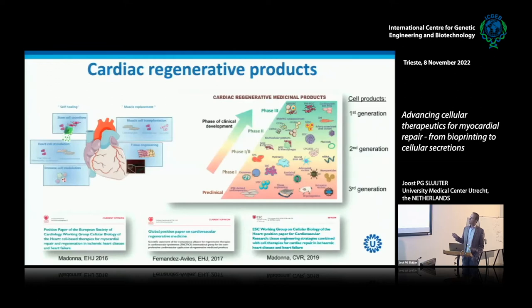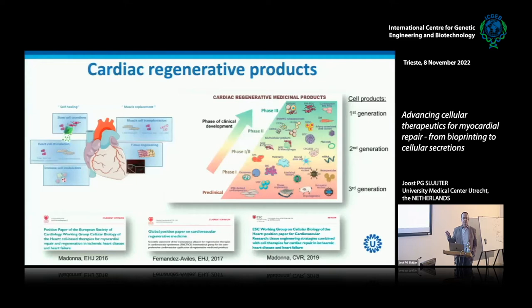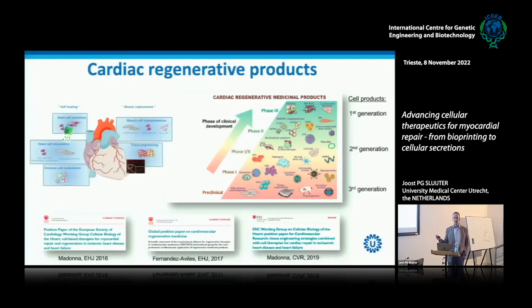This cartoon shows all kinds of generations of cells and products that have been pushed from early stage into phase three trials. I can summarize that they all kind of failed, showing no benefits. We tried mononuclear cells, stromal cells, all kinds of products from these cells put into patients. In the end they were safe — luckily we didn't see any problems in patients — but also they didn't benefit. The efficiency of ejection fraction recovery or functional benefits was marginal.